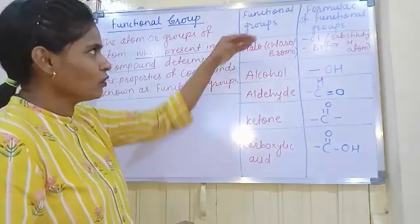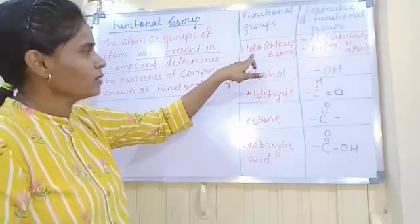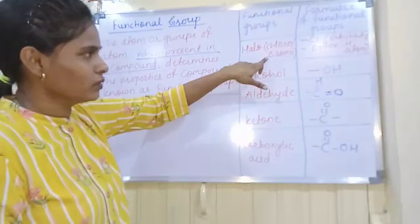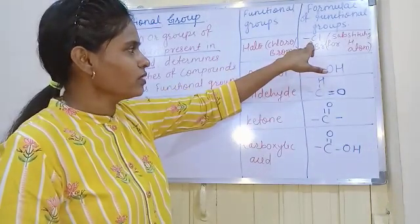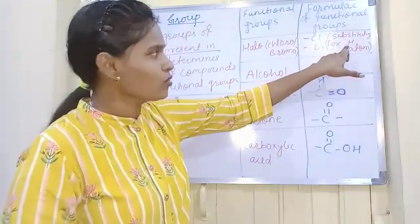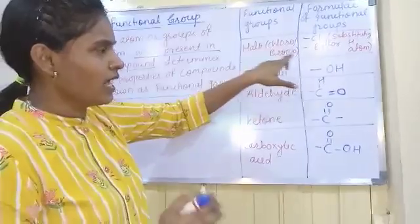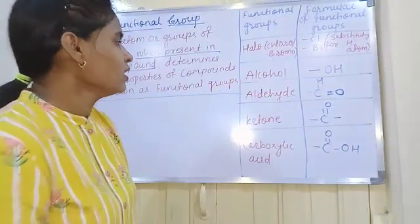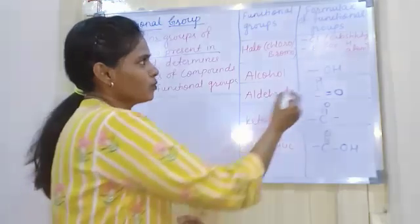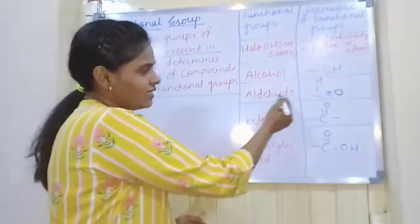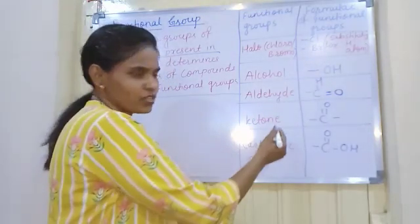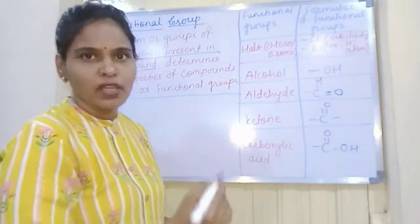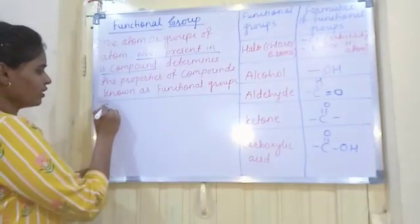Several examples of functional groups are given here. The functional group 'halo' means halogen — two examples are chloro (chlorine) and bromo (bromine). If chlorine substitutes hydrogen in a hydrocarbon it is termed as chloro, and if bromine substitutes hydrogen it is called bromo. Next is the alcohol functional group, denoted by –OH. Then aldehyde, denoted by –CHO. Ketone, denoted by C=O. And carboxylic acid, denoted by –COOH.